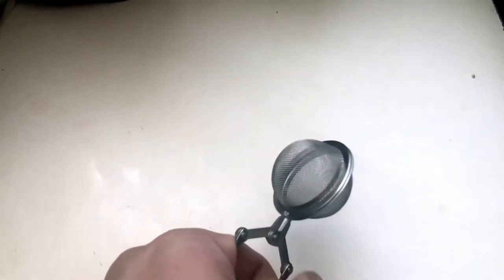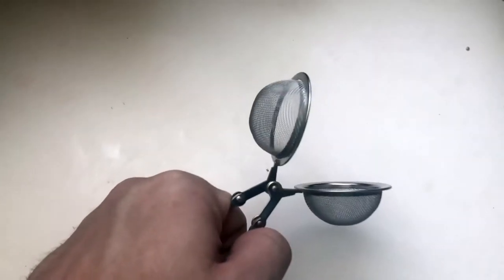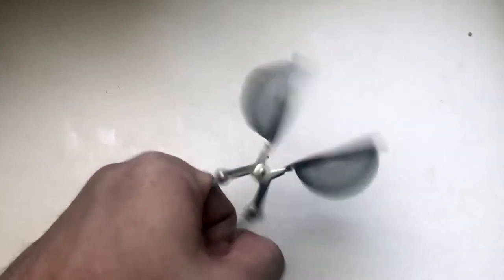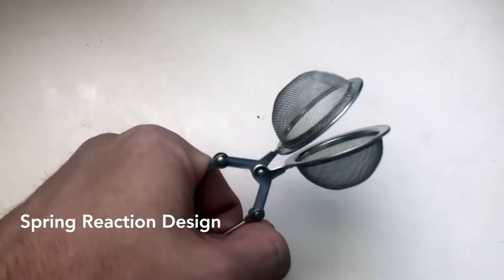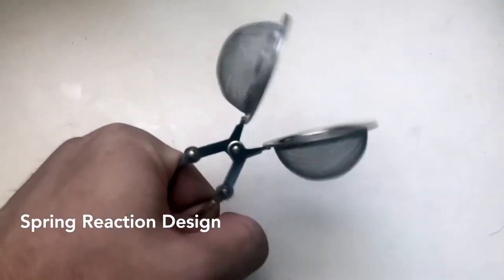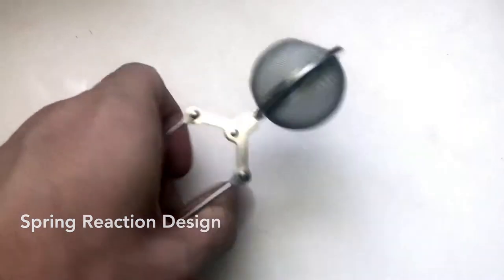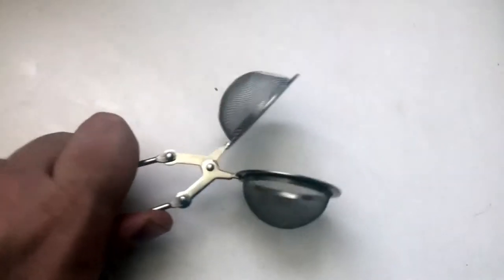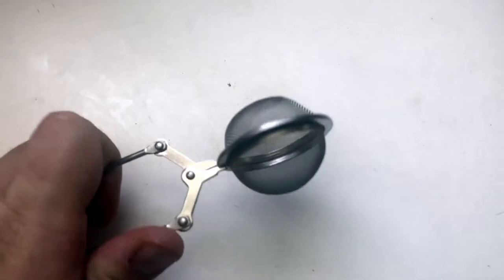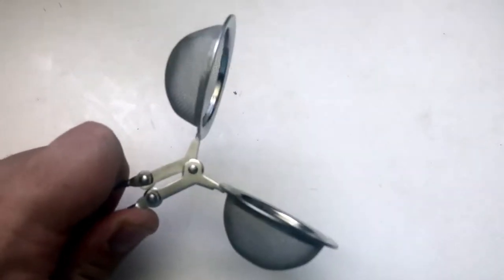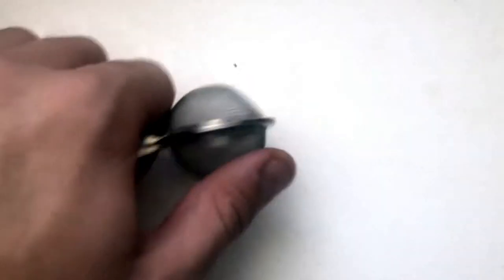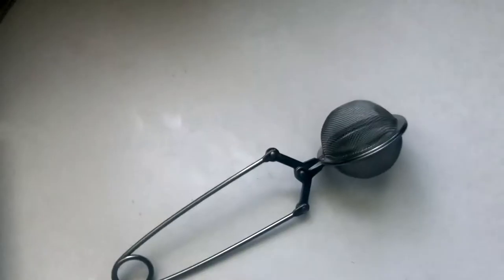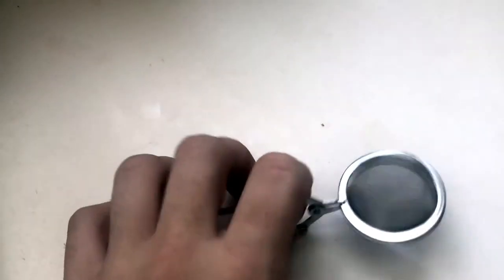The handle on this thing has a spring action design, so when you squeeze it that's when it opens, and then when you let it go it just shuts, kind of spring shut. That's kind of nice. It's not the easiest thing to squeeze open, but it's actually probably better that way just because when you get the tea in there it's going to stay closed. You're not going to worry about it opening up and spilling into your water.